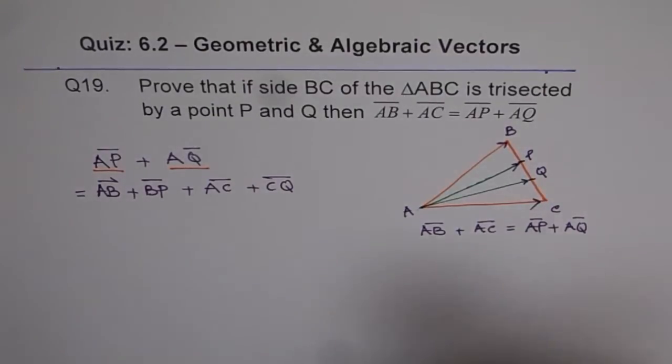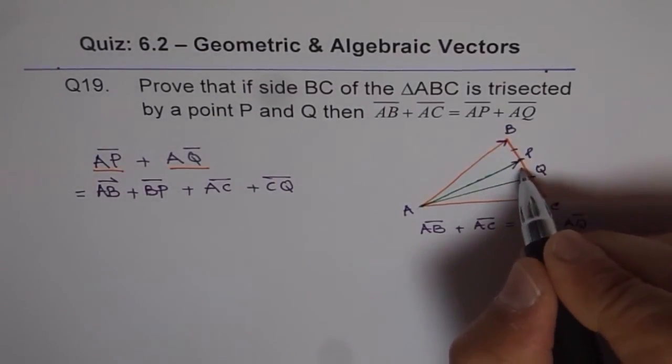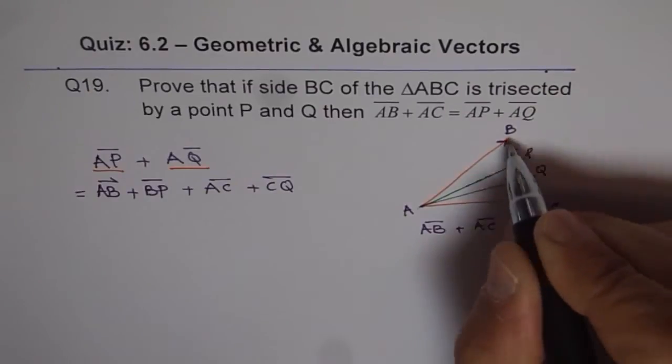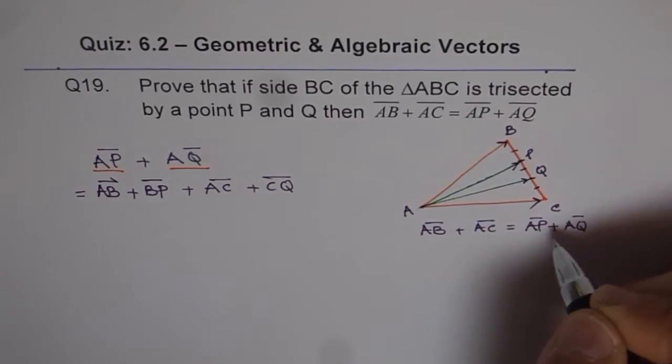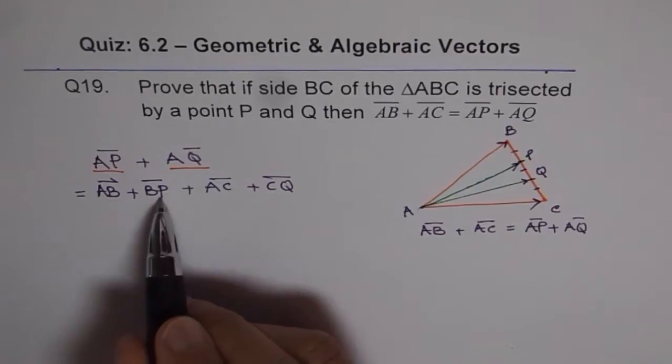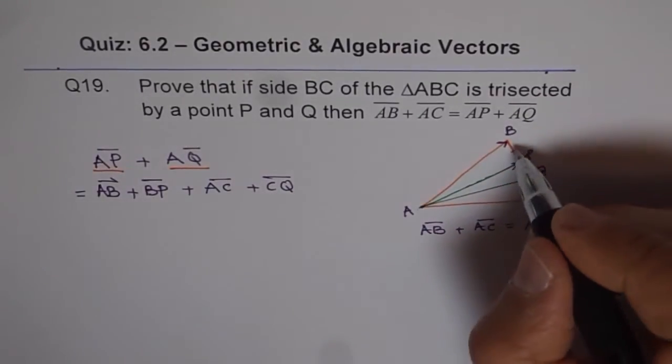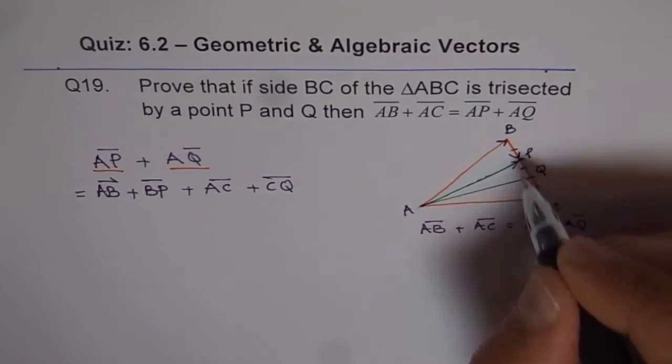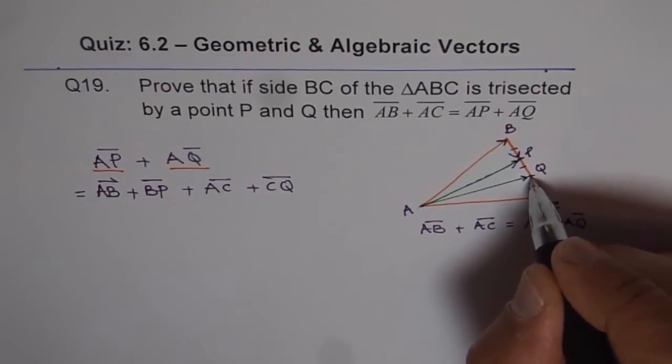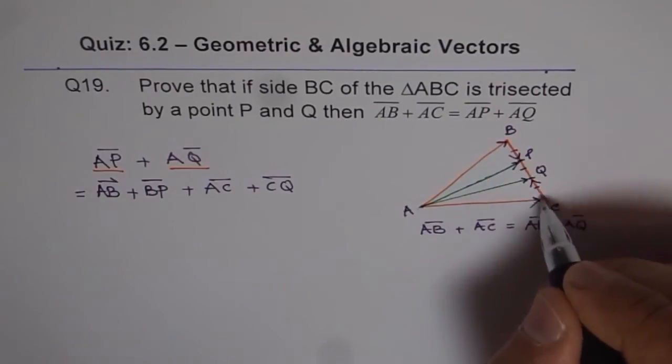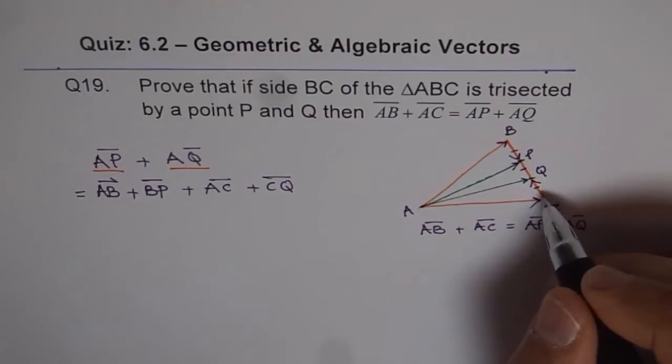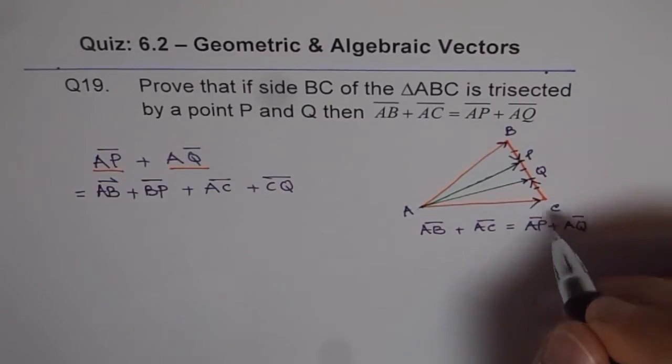Now you will observe that this is trisected and all these sides are equal since it has been trisected. Now we have BP and CQ. BP is like this direction and CQ is that direction. Their magnitude is same and they are directly opposite vectors. So when you add these two they should cancel out.